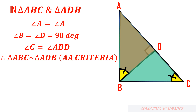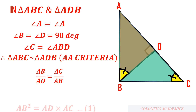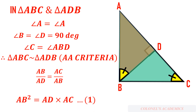Since triangles ABC and ADB are similar, AB/AD = AC/AB. Therefore AB² = AD × AC. Let us remember this result.